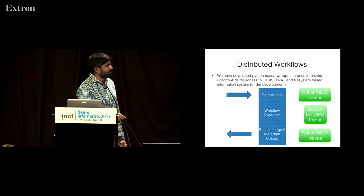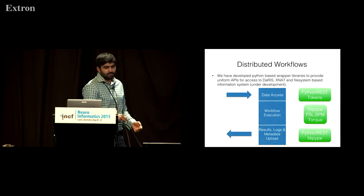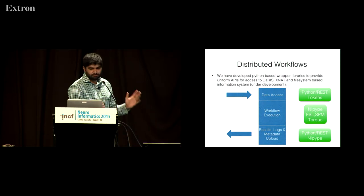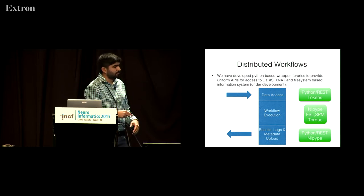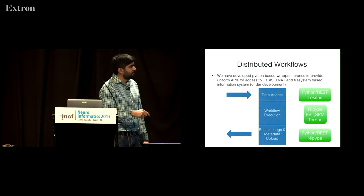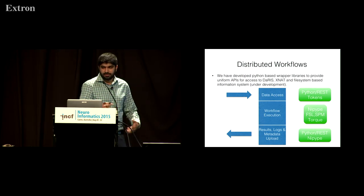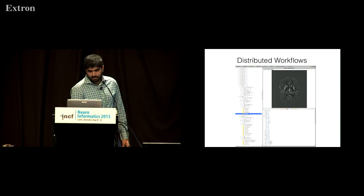So our workflow execution is dependent on open source tools. The majority of the cases, 99% of the time, we're using NiPipe to describe our workflow. And the NiPipe workflow makes use of FSL, SPM, tools that are available in the community. And then whatever tools are available for the job managers on the systems themselves, so Torque, PBS, SunGrid Engine, et cetera. And then, we take the results, which are, the expected results are also described in the workflow, with the metadata and some logs, and then we can upload them back into Daris XNAT, whatever database you're using. And again, this is Python REST, a little bit of NiPipe.